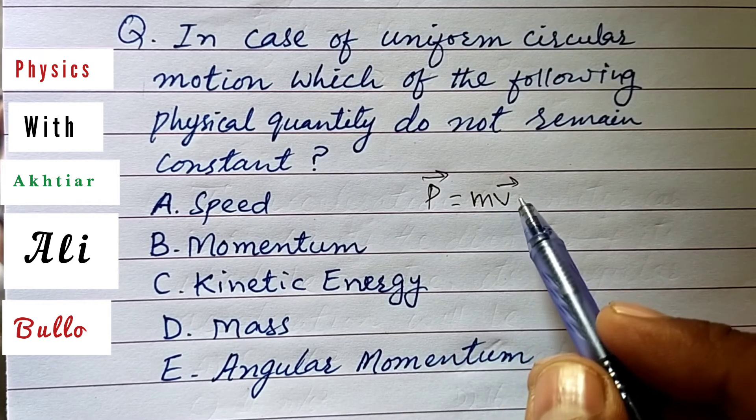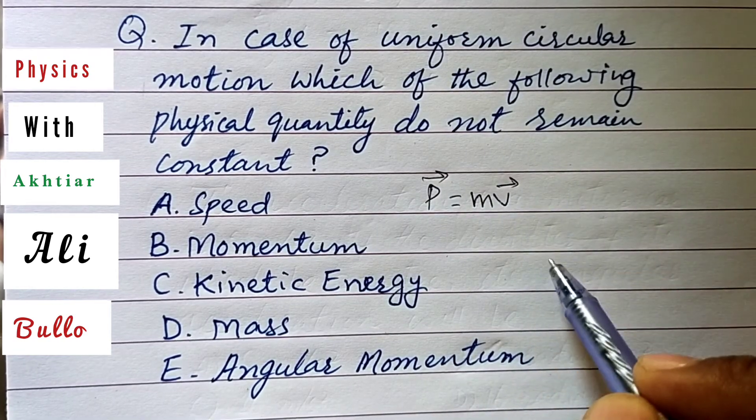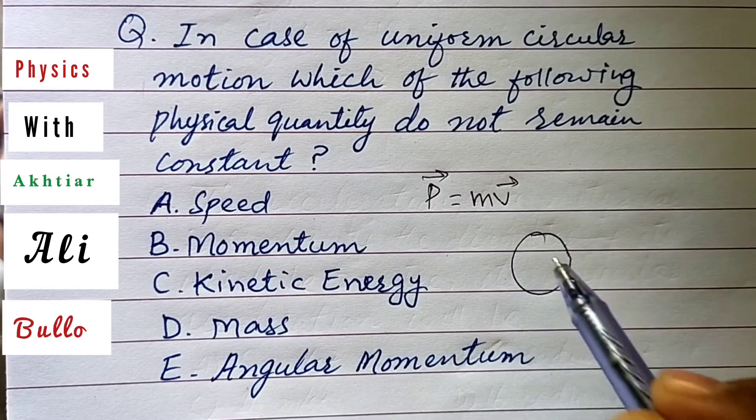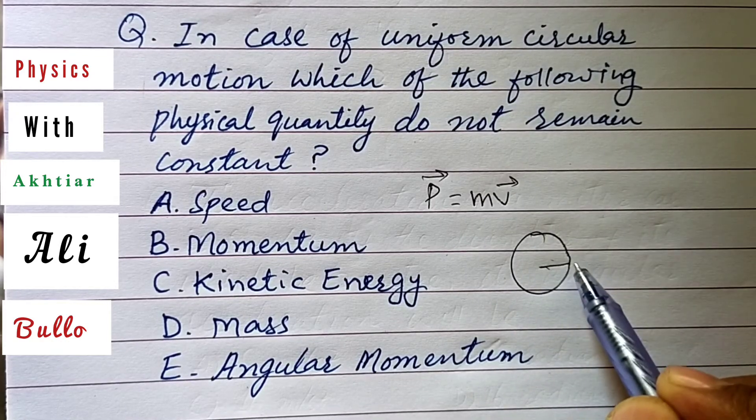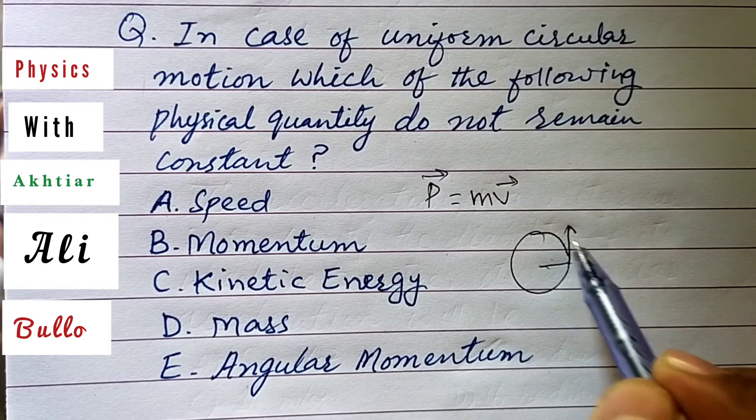velocity is a vector quantity. In uniform circular motion, the direction of linear velocity is along the tangent